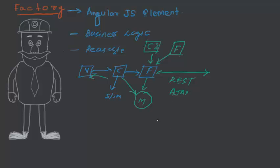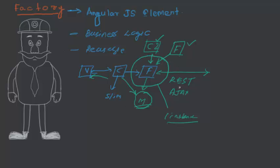One important thing to note: AngularJS, whenever it creates a factory, will always create only one instance of it. So if you store any data or have access to any model, any data changed by one controller will be available to any other factory or controller as well. That means only one instance will be created and shared across different components.